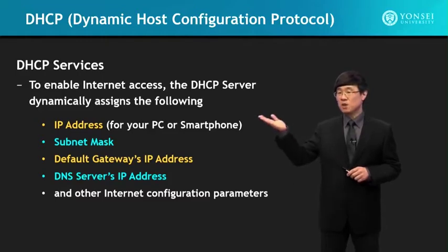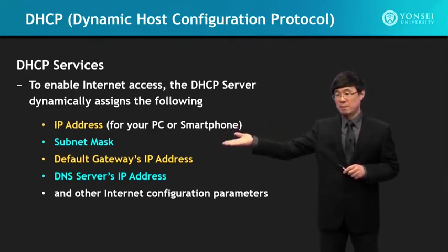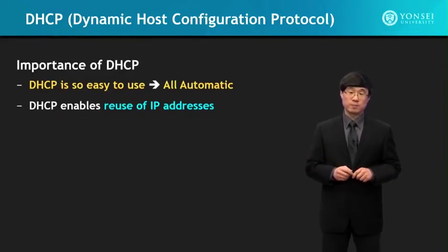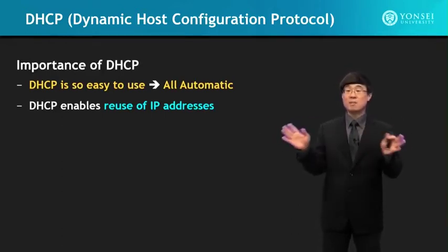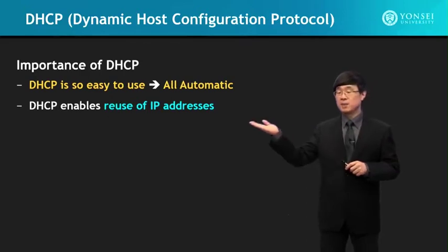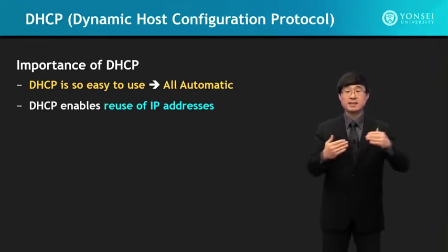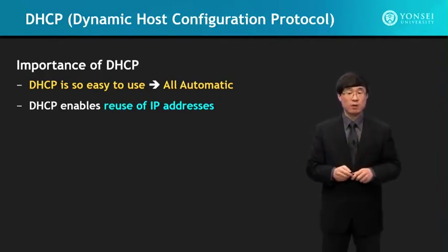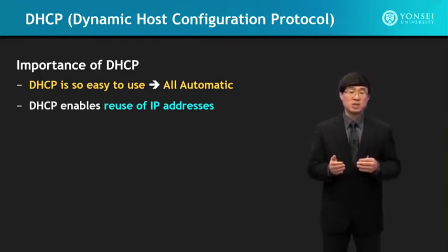DHCP services enable Internet access. The DHCP server dynamically assigns the IP address, subnet mask, default gateway, and DNS server's IP address. DHCP is so easy to use — it's all automatic. DHCP enables reuse of IP addresses: if there's a pool of IP addresses, it can dynamically assign them, and when the service is no longer needed, take them back and reuse them very effectively. With a small number of IP addresses, you can serve a lot of people based on their needs when they need it.